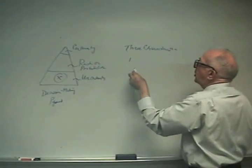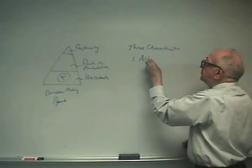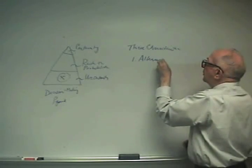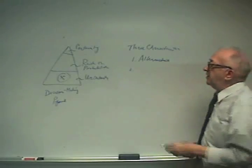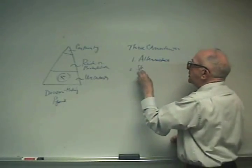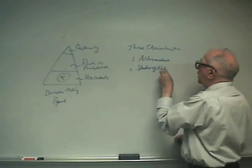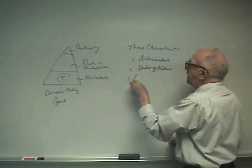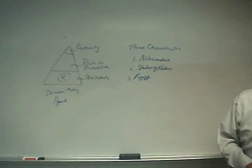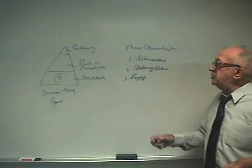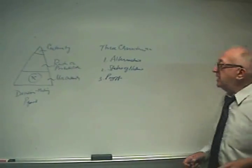One is we have to worry about alternatives. Two is we worry about the states of nature, what can occur. And three is the payoffs, what do you get. So these are the three characteristics that all decision-making modes have.